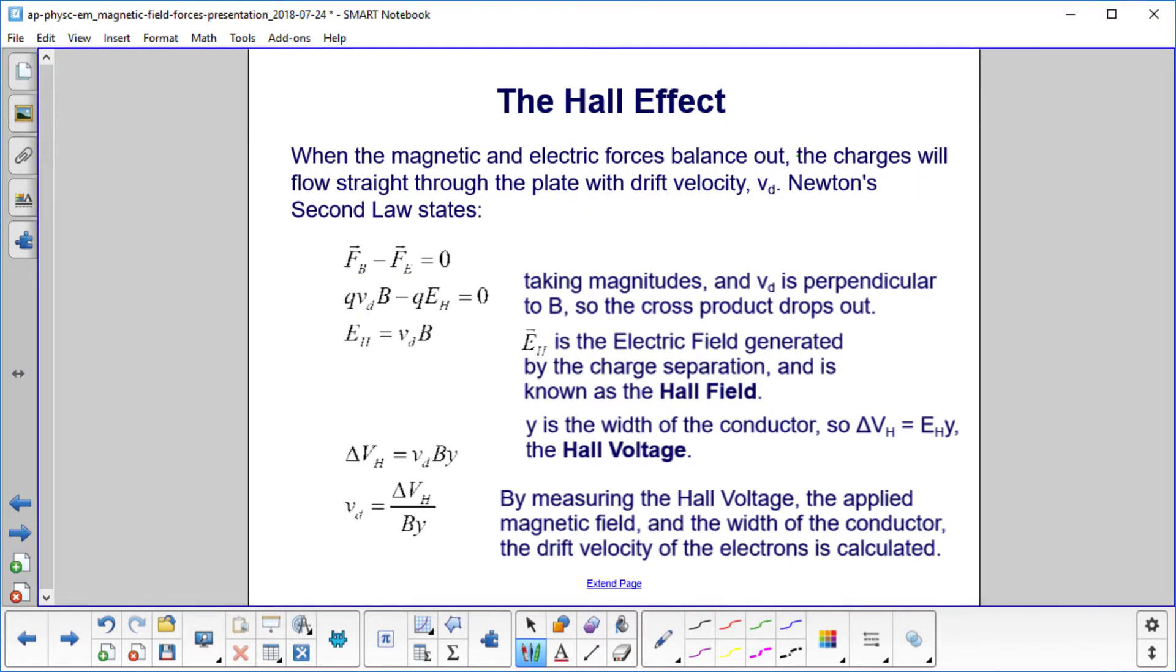When the magnetic and electric forces balance out, the charges will flow straight through the plate with drift velocity V sub D. We invoke Newton's second law. The two forces balance out. We substitute in QVB and QE, and Q cancels out. We have E sub H equals VD times B. That's the Hall field.